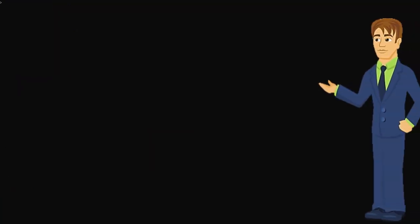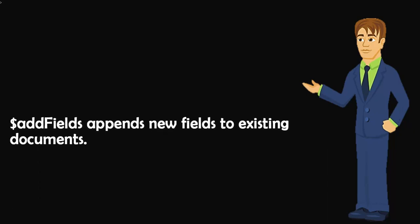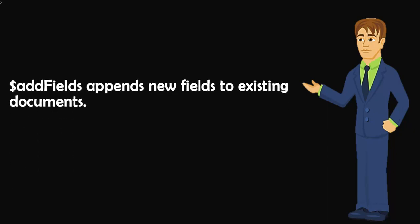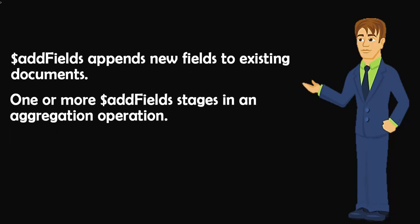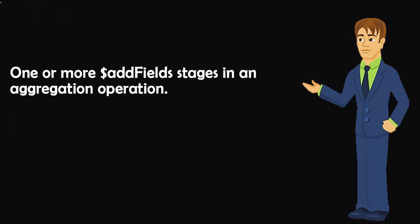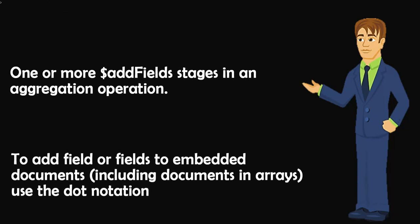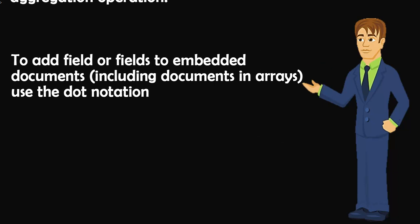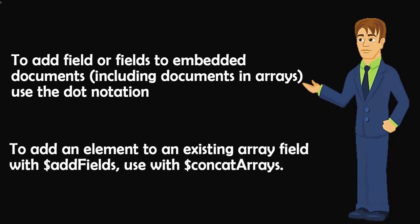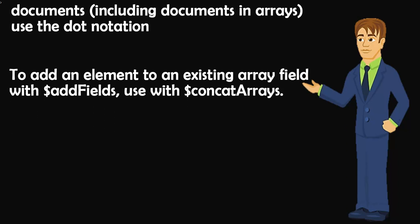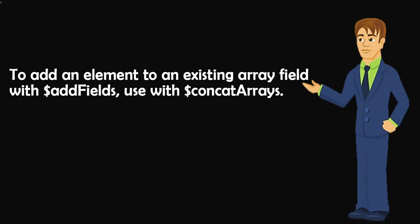To sum up, we learned how $addFields appends new fields to existing documents, and how to use one or more $addFields stages in an aggregation operation. To add fields to embedded documents, including documents in arrays, use dot notation. To add an element to an existing array field with $addFields, use it with $concatArrays.